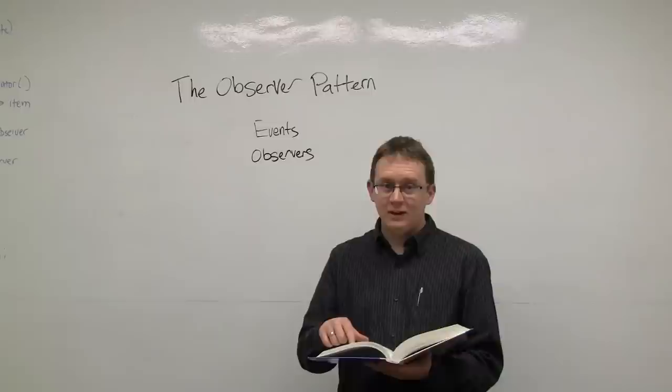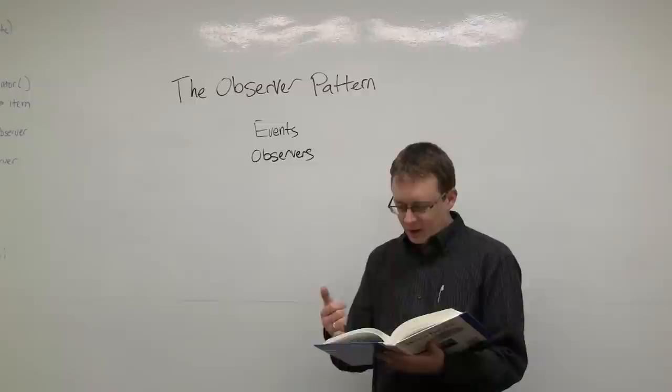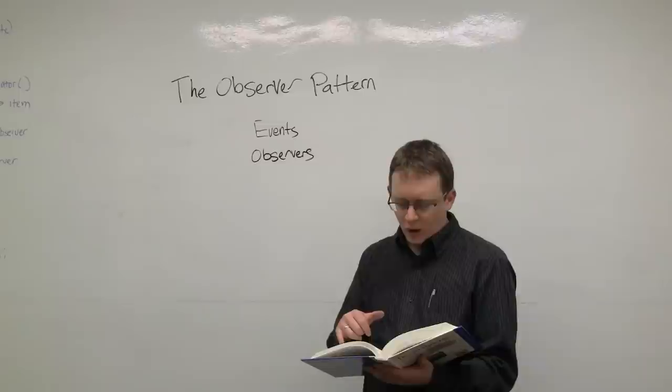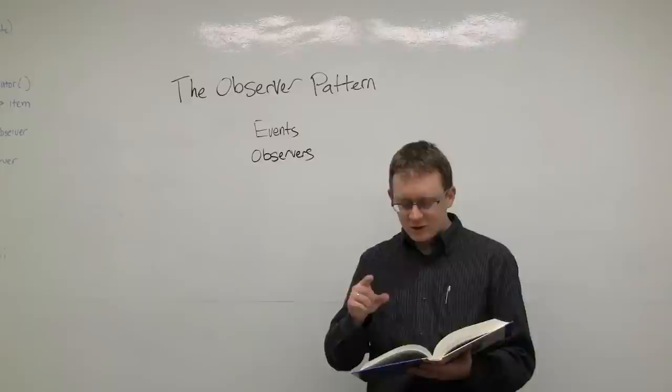That's important. A little further down it says: a common side effect of partitioning a system into cooperating classes is the need to maintain consistency between related objects. You don't want to achieve consistency by making the classes tightly coupled, because that reduces their reusability. So let's start with an example.